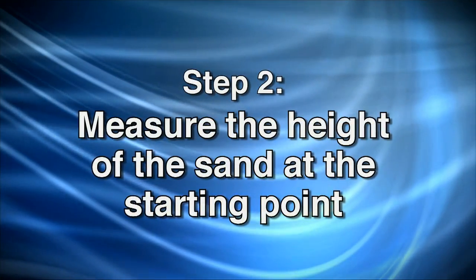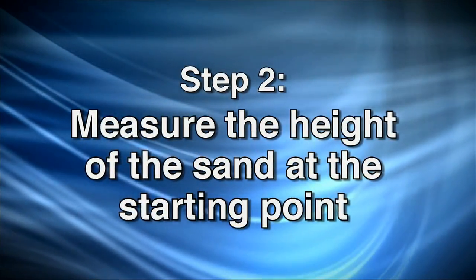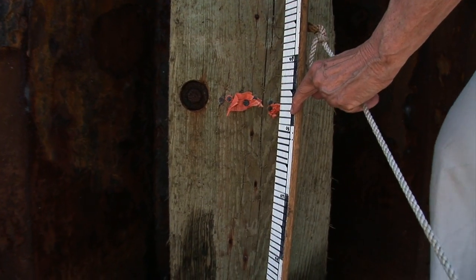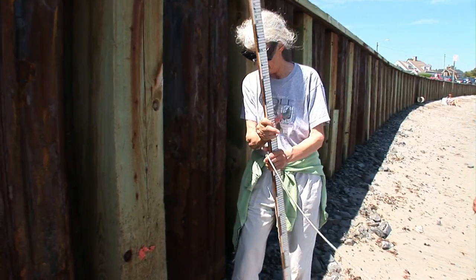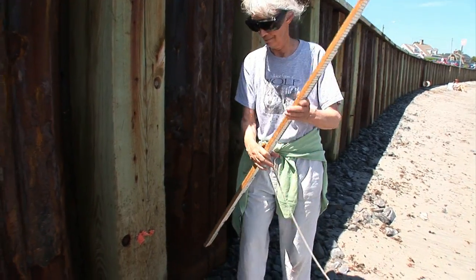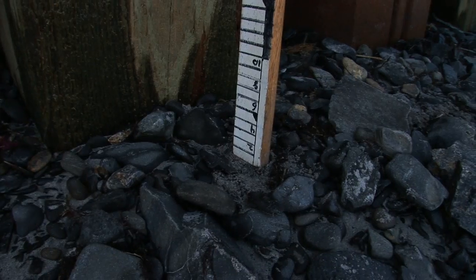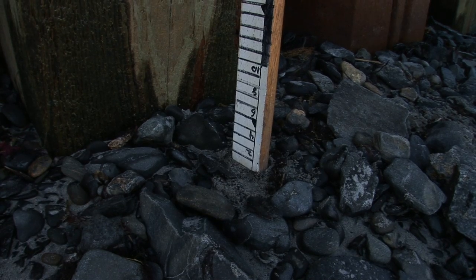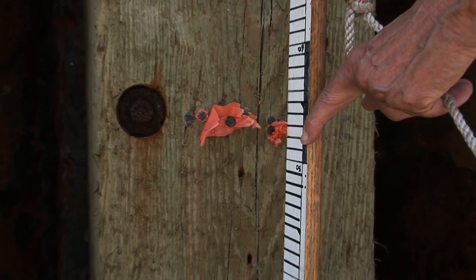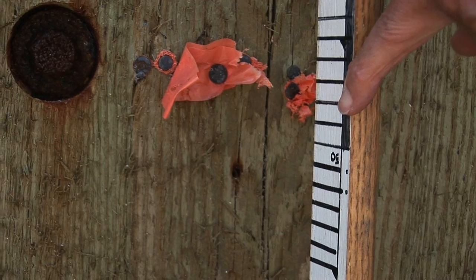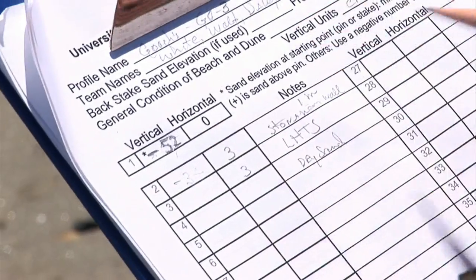For step two, measure the height of the sand at the starting point. We need to measure the height of the starting point in relation to the height of the sand. If the starting point is above the sand, as it is here, turn one of your poles upside down so that the zero is on the sand. Measure up to the top of the starting point and note the measurement — 52. Record this measurement on the data sheet.